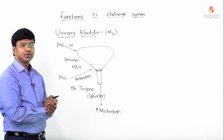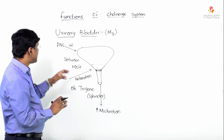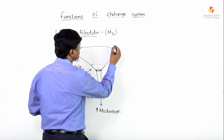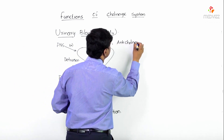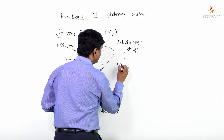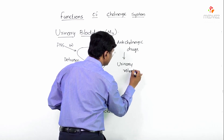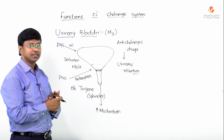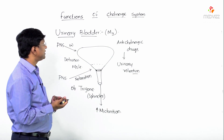Now, what do anticholinergic drugs do? Anticholinergic drugs will result in urinary retention, because their action is exactly opposite to that of the parasympathetic nervous system. So anticholinergic drugs will cause urinary retention. That is the effect of the cholinergic nervous system on the bladder.